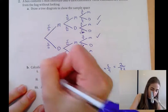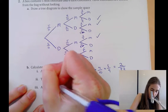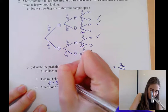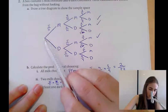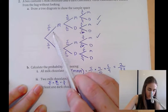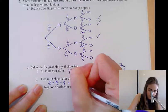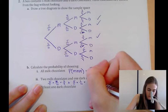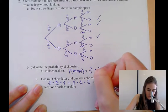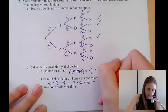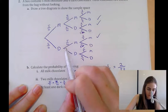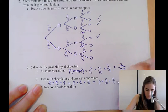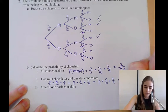P(milk-milk-dark) = 5/11 × 4/10 × 6/9. P(milk-dark-milk) = 5/11 × 6/10 × 4/9. P(dark-milk-milk) = 6/11 × 5/10 × 4/9. Adding these three together gives a probability of 4/11.